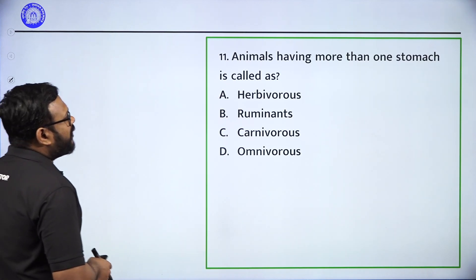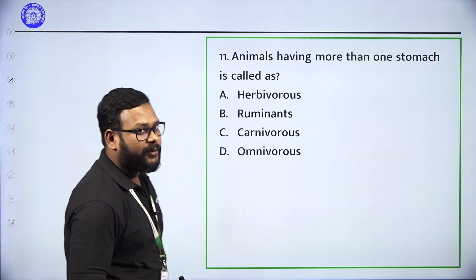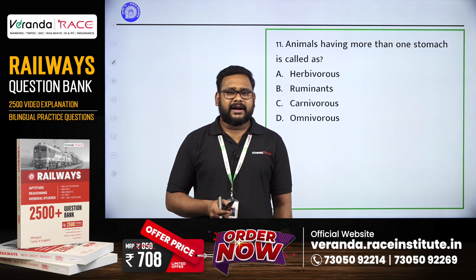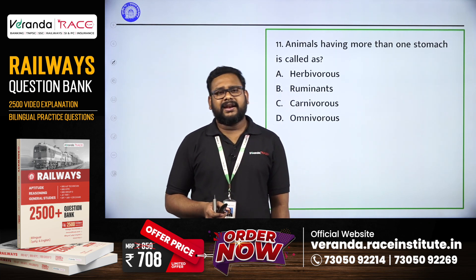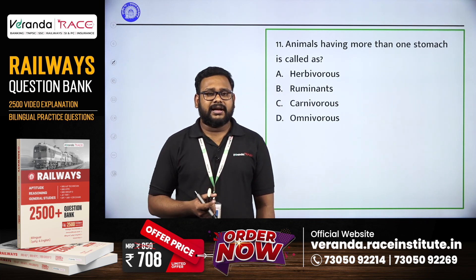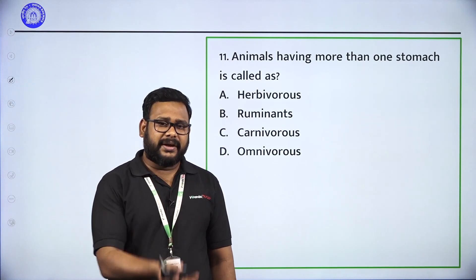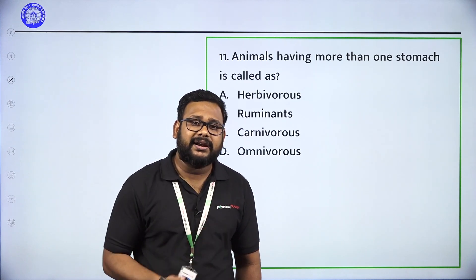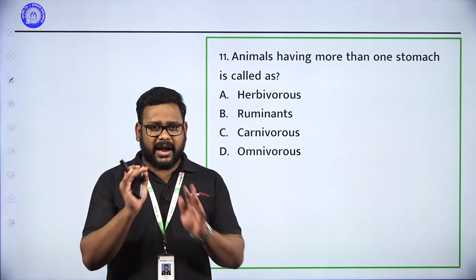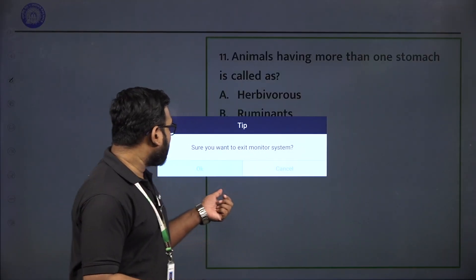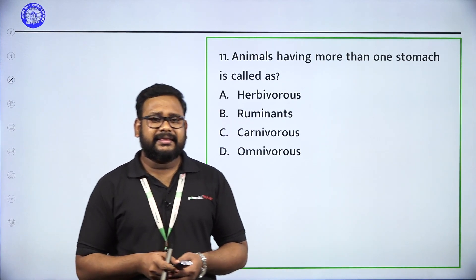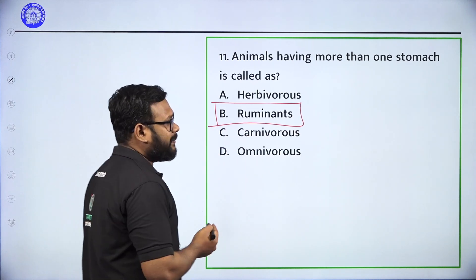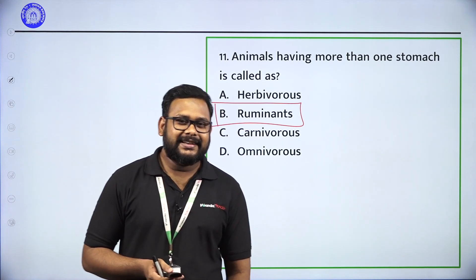Animals having more than one stomach are called — herbivorous, ruminants, carnivorous, or omnivorous? The origin of ruminants is called ruminants. Option B, ruminants, is the correct answer.